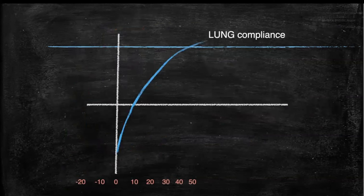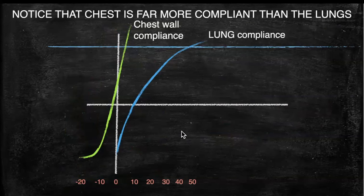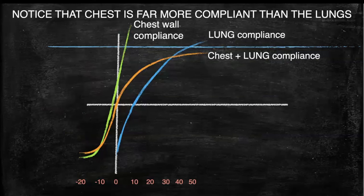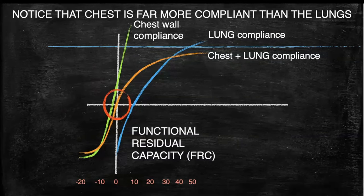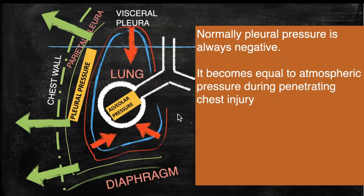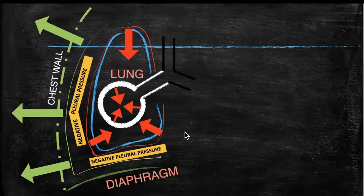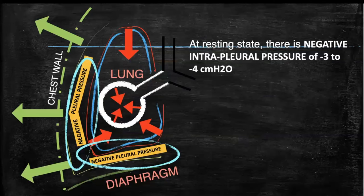This is the pressure-volume loop of lung compliance, and the pressure-volume loop of chest wall compliance. We can clearly see that the chest wall is far more compliant than the lungs. This is the average pressure-volume loop of chest wall plus lung compliance and the functional residual capacity. Normally, the pleural pressure is always negative; it becomes equal to atmospheric pressure during penetrating chest injury, and becomes positive during tension pneumothorax, pleural effusion, intra-abdominal hypertension, or thoracic cage malformations.